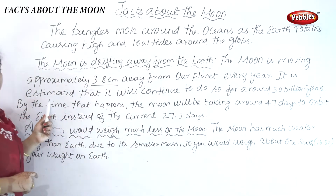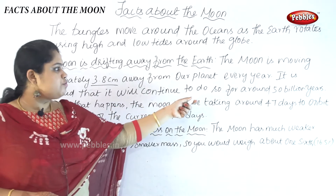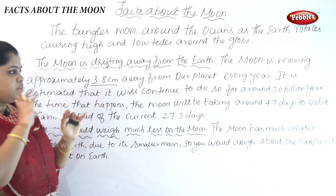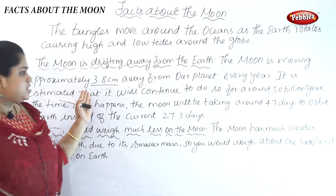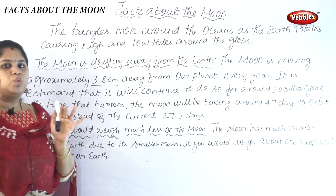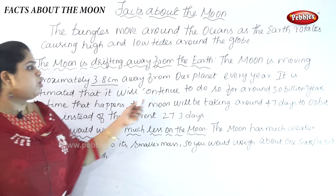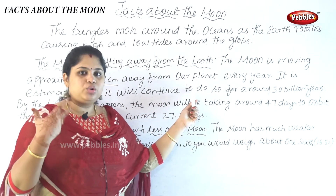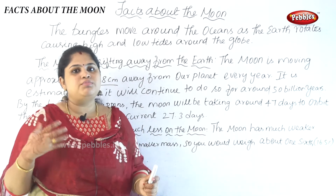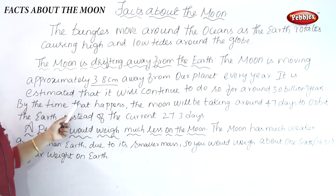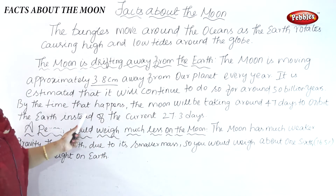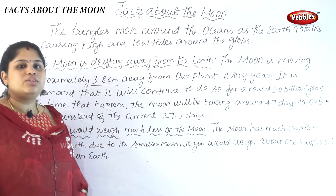It is estimated that the moon will continue drifting for around 50 billion years. By the time that happens, the moon will be taking around 47 days to orbit the earth, instead of the current 27.3 days.